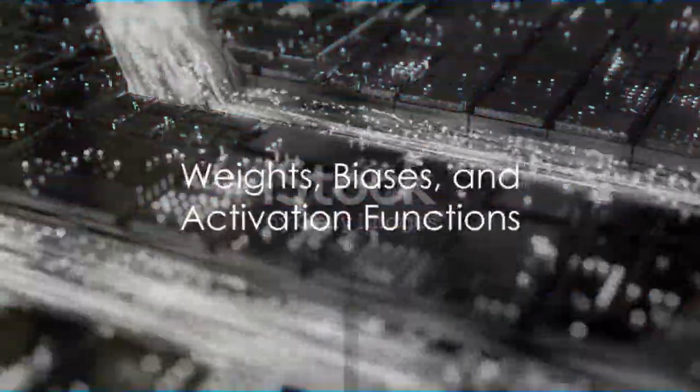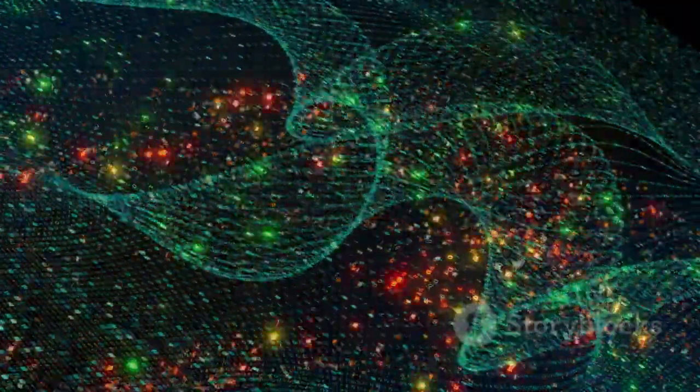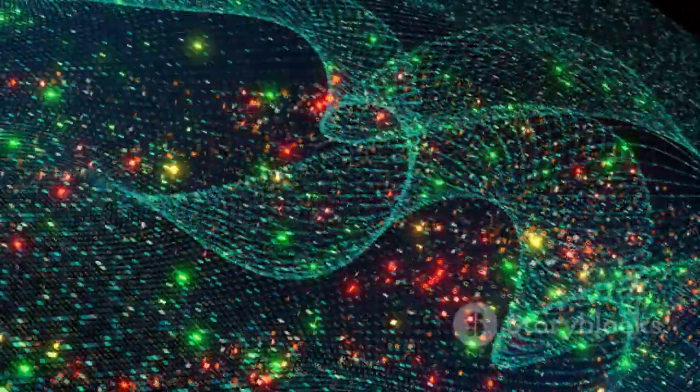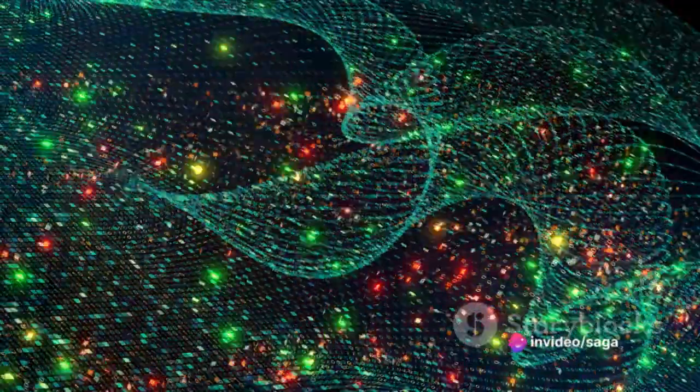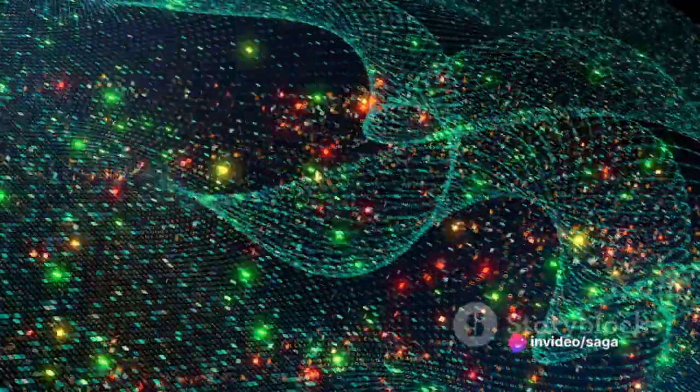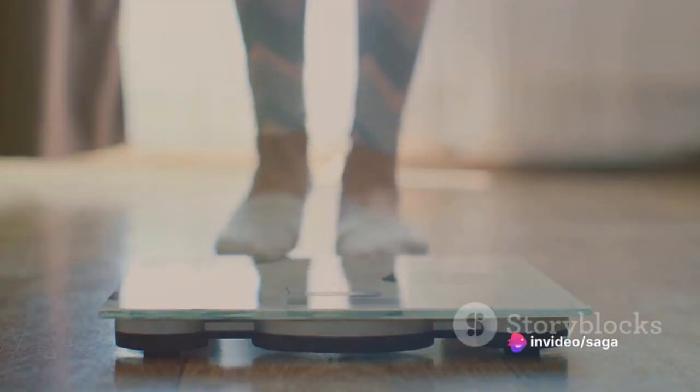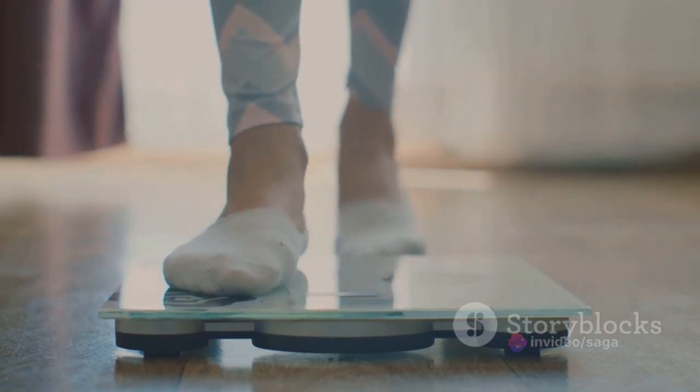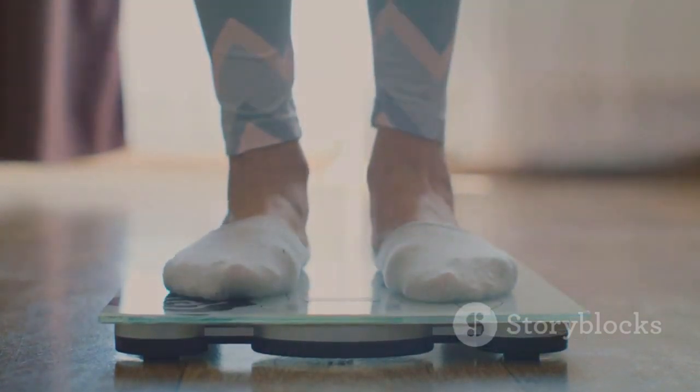Each connection between neurons has an associated weight, which determines the strength of the connection. These weights are parameters that the network learns during training. Additionally, each neuron has a bias, an offset applied to the weighted sum before passing it through the activation function.